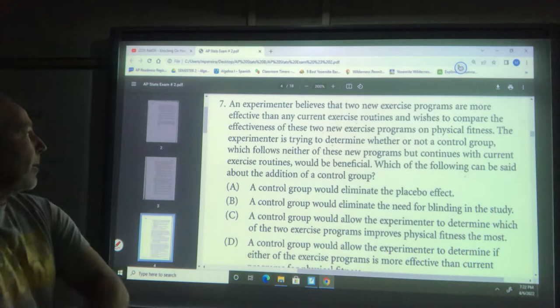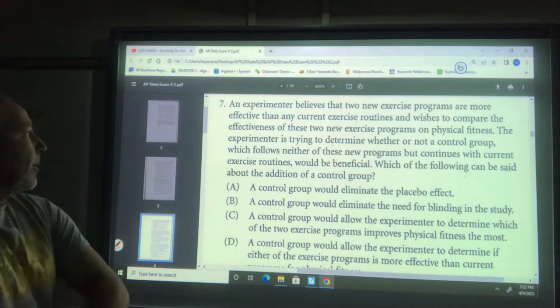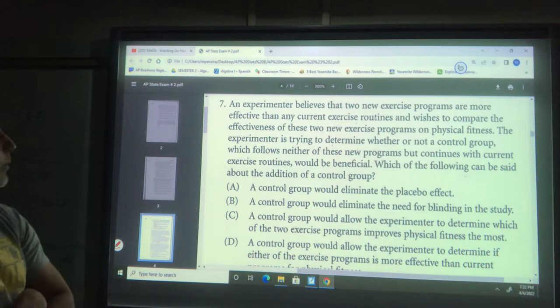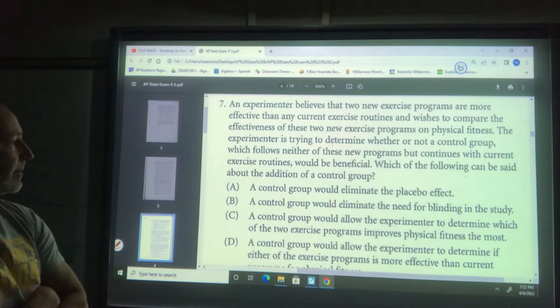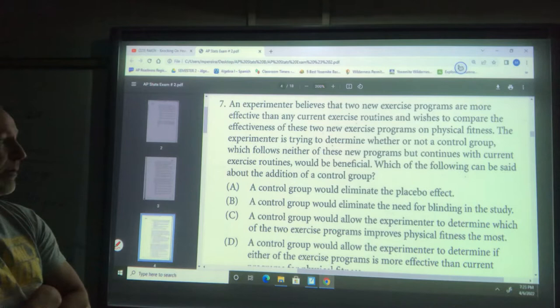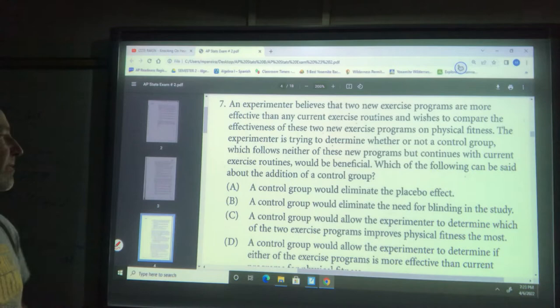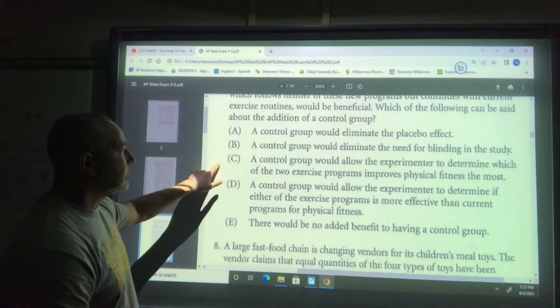Number seven: An experimenter believes two new exercise programs are more effective than current routines and wishes to compare their effectiveness on physical fitness. The experimenter is trying to determine whether a control group which follows neither of the new programs but continues with current routines would be beneficial.